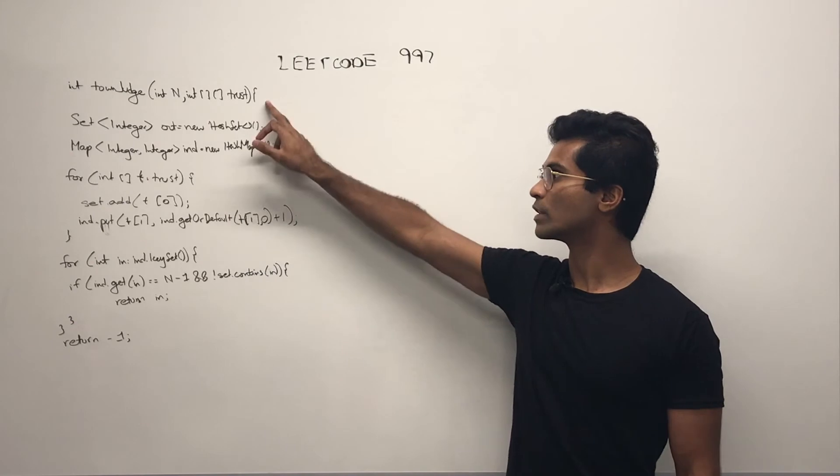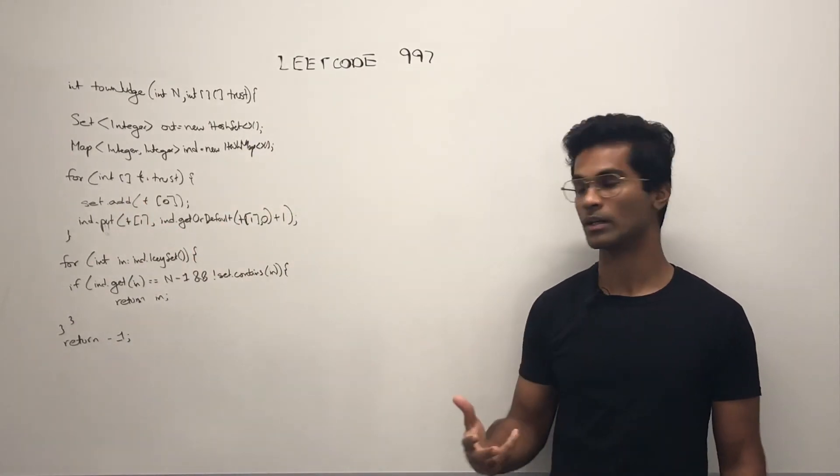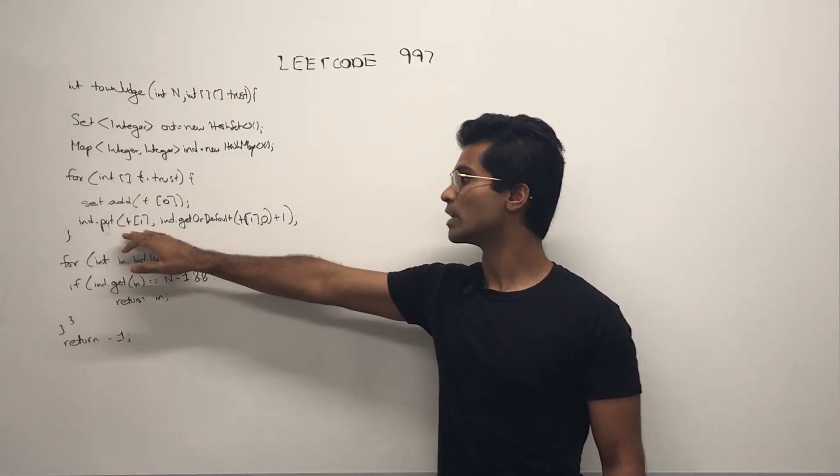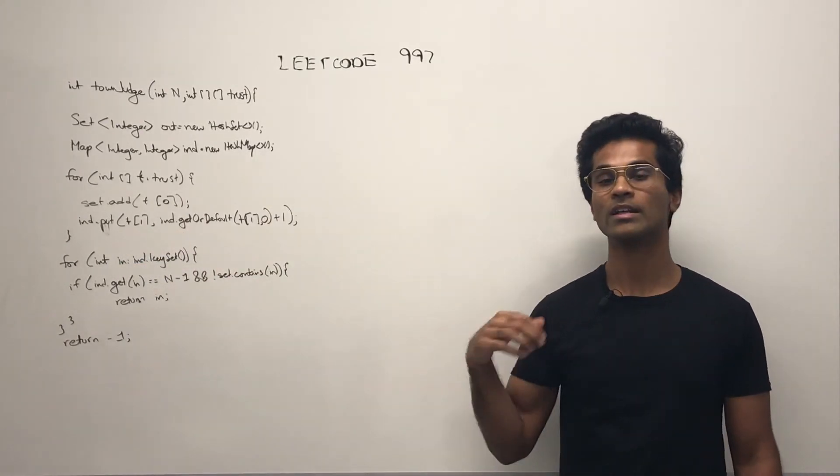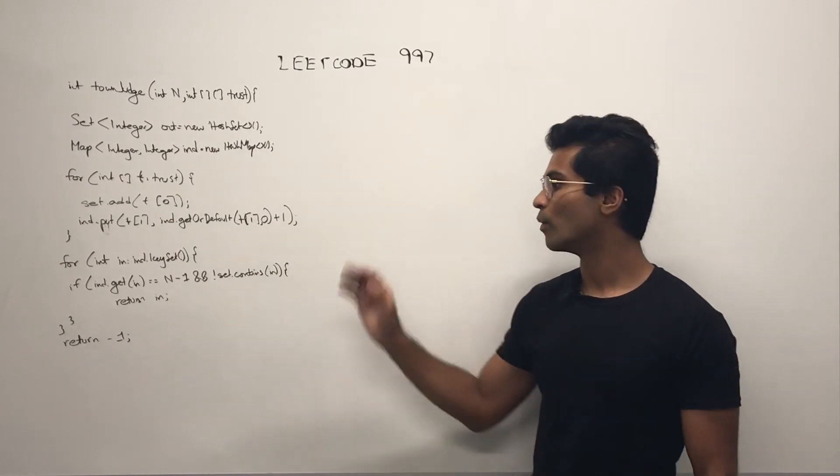So first, we're going to iterate through our trust, and we are going to add t, which is the outgoing node, and we're going to increment our incoming node by 1 every time we have an in degree.